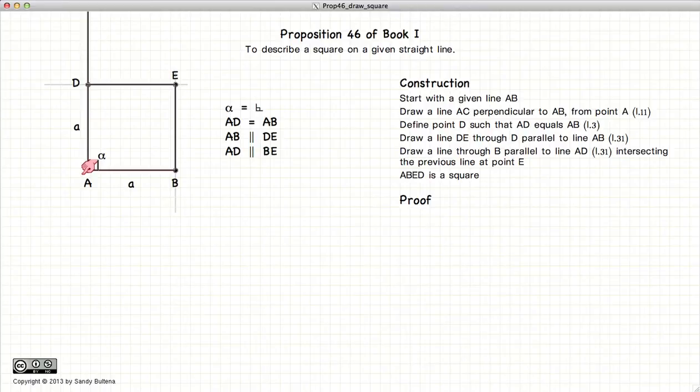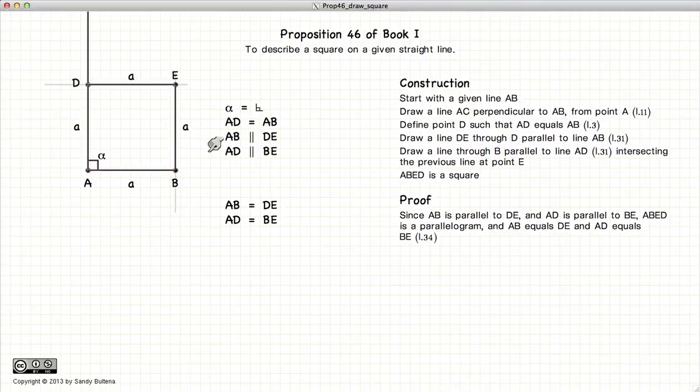Well, we have a parallelogram. So that means that AD is going to equal BE, and AB will equal DE. So we have all four sides of our parallelogram are equal. So it's an equilateral.